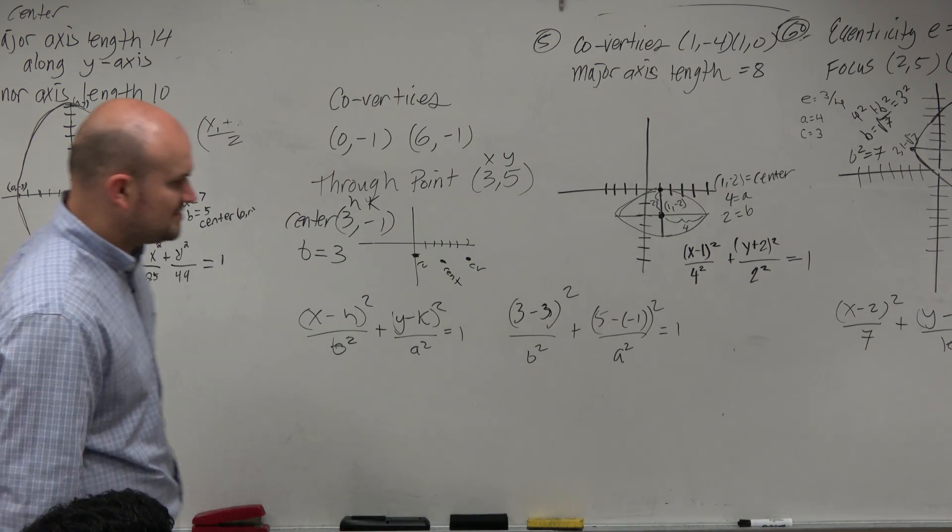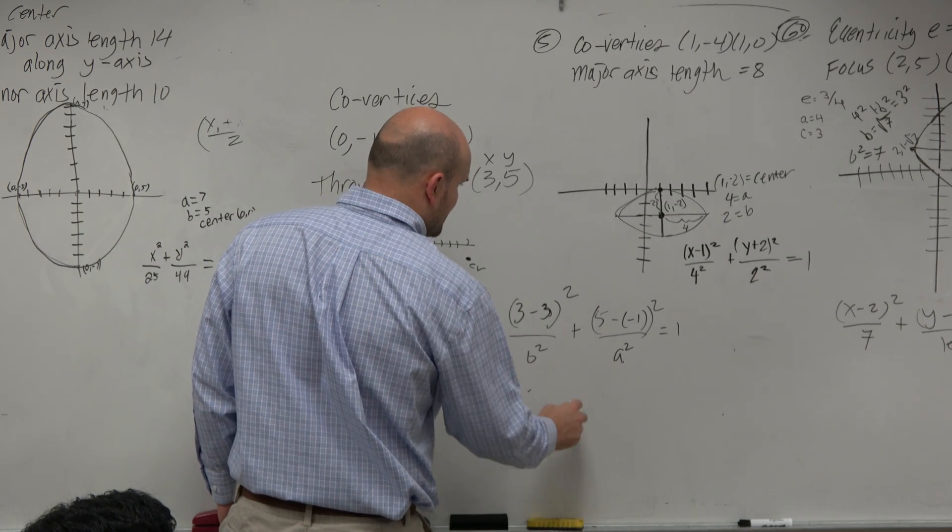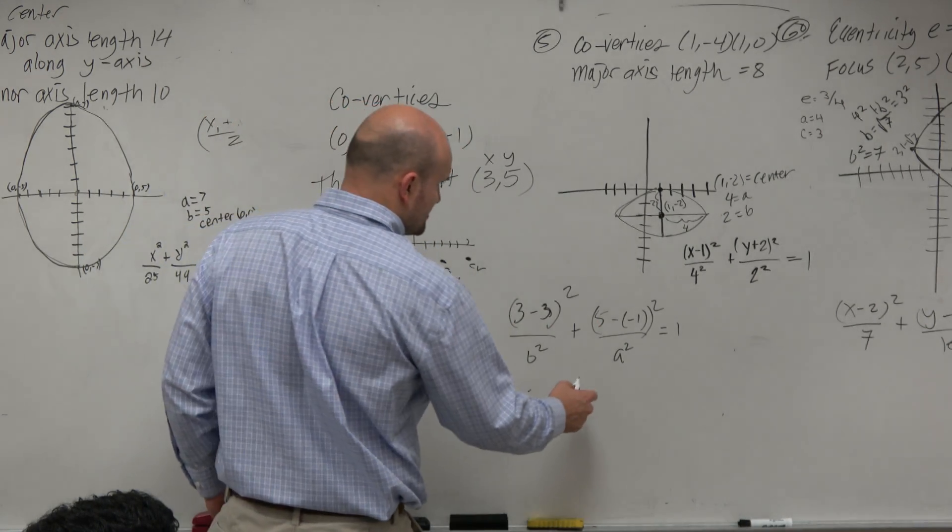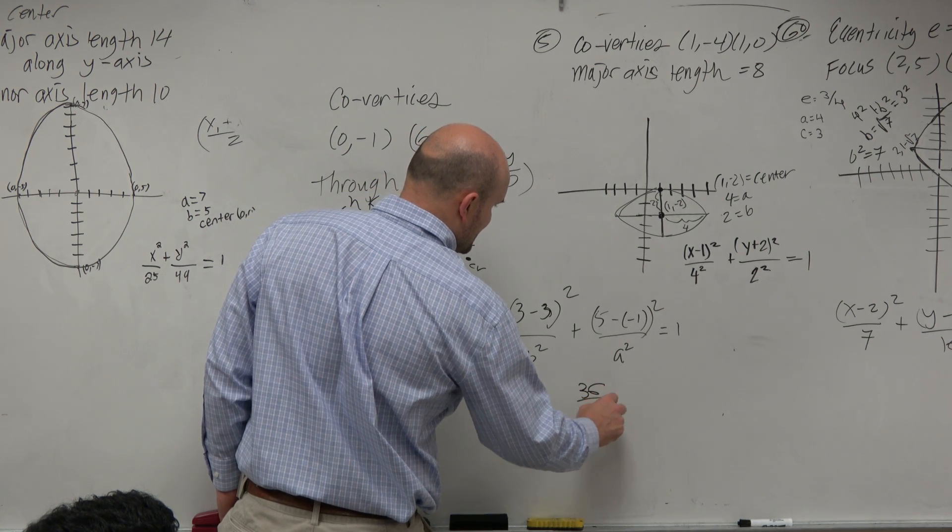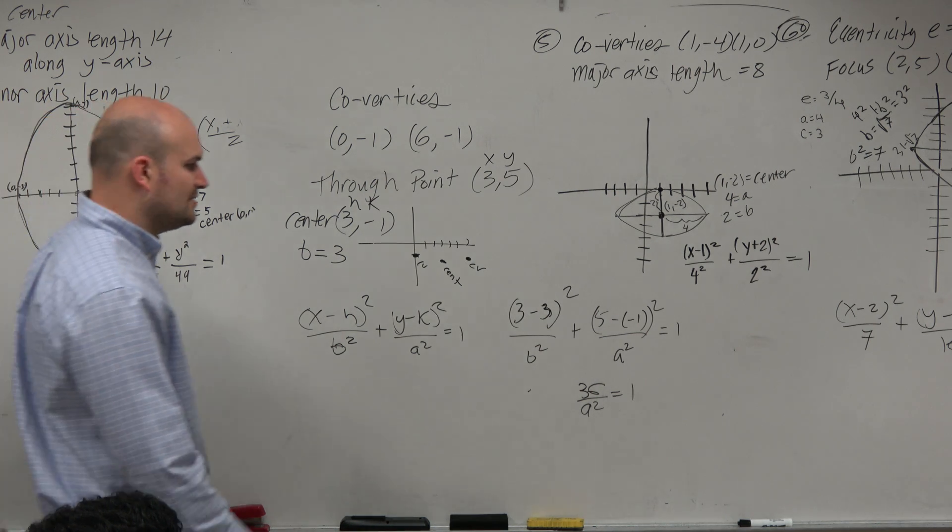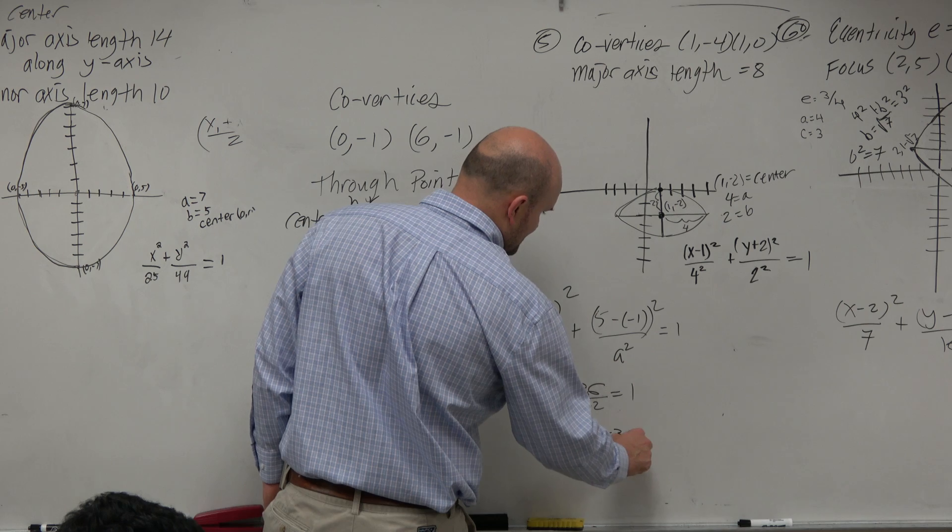Well, 3 minus 3, guys, is 0. 0 squared is 0. 0 divided by b² is 0. So 5 minus a negative 1, same thing as 6. 6 squared is 36 over a² equals 1. So just multiply a² on both sides, guys. You get a² is equal to 36.